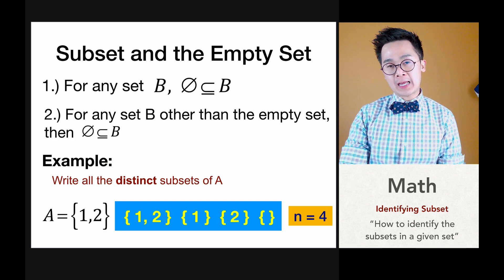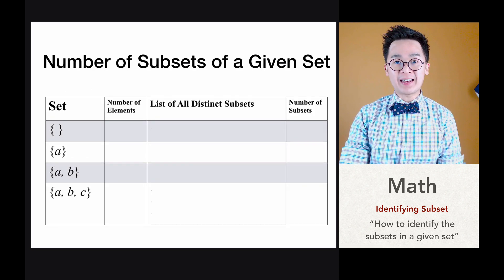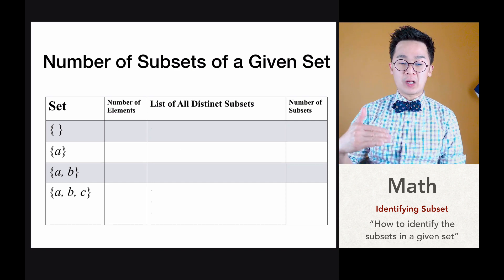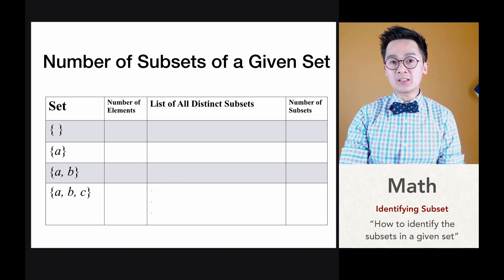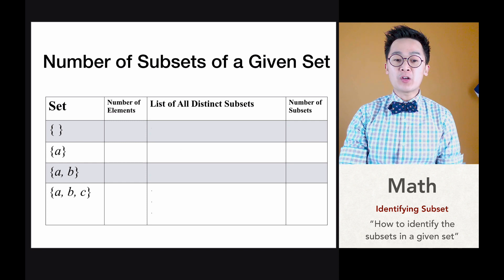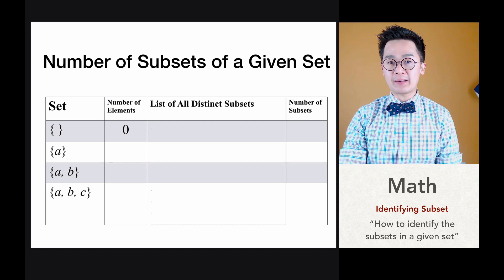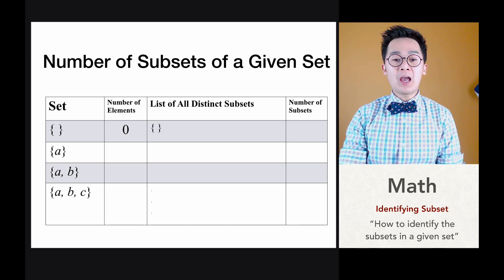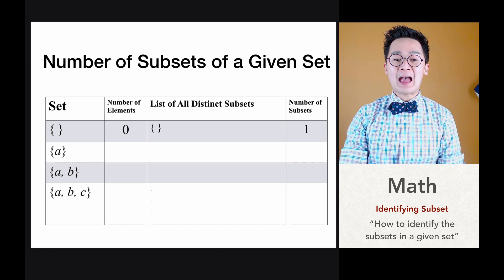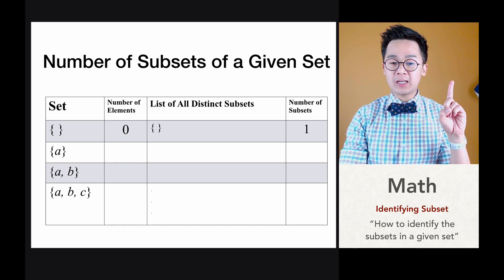Let's have more examples on how we can count the number of subsets for elements in a given set. We have four different sets from the top row to the bottom row, and we're going to count the number of elements of each row. For the first one, we have an empty set represented by curly braces with no elements. If we count the number of elements of set 1, we count zero elements. By the definition of an empty set, an empty set is always a subset of any set, so we have one distinct subset for this null set — zero elements but one subset.